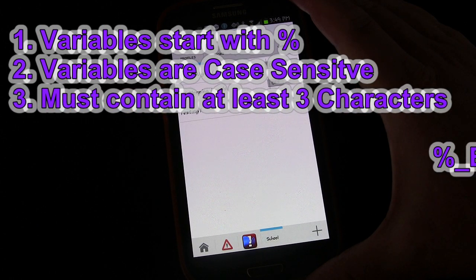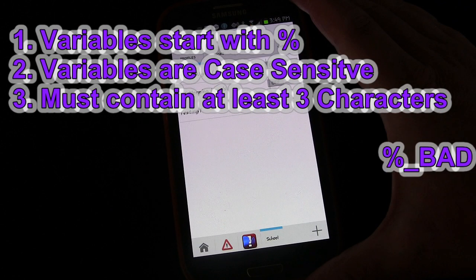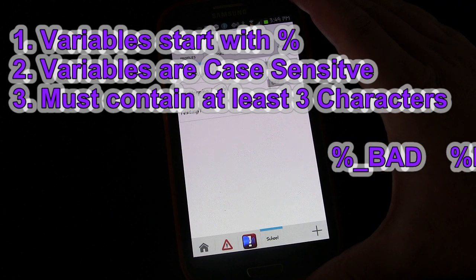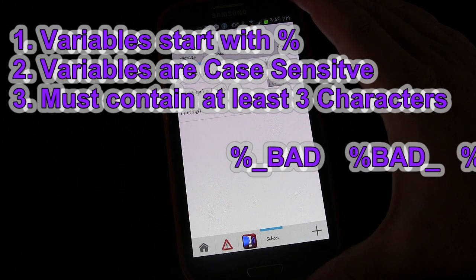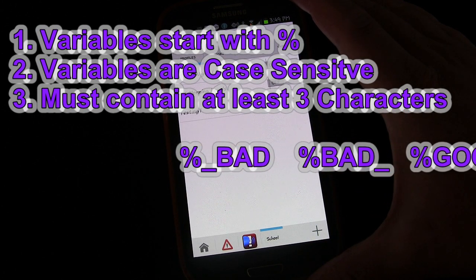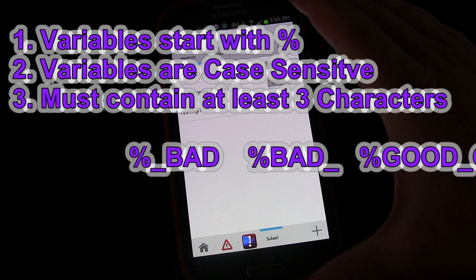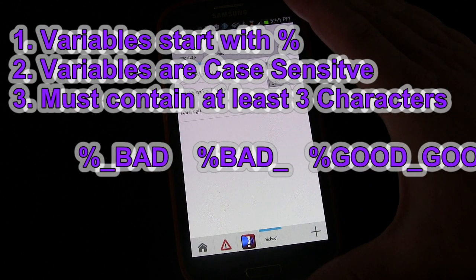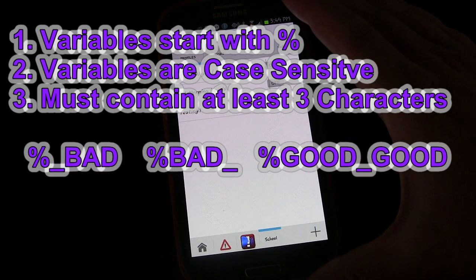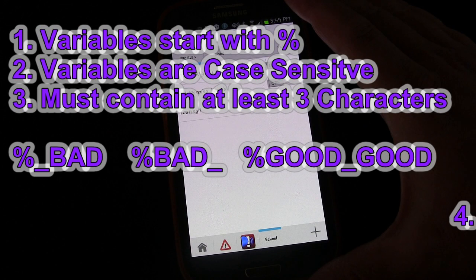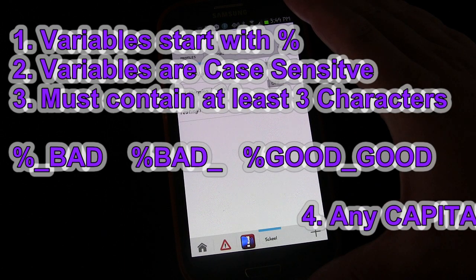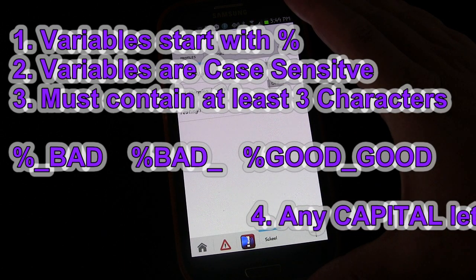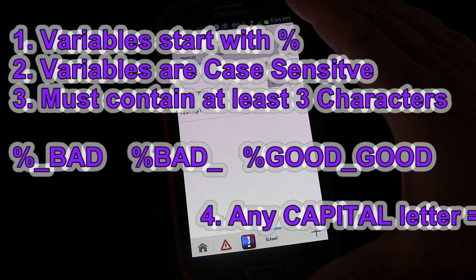A global variable holds permanently and can be accessed by any other task. It will maintain its value until it is changed or Tasker is uninstalled. So if you have a capital letter inside the variable, that makes it permanent and global — meaning other apps could potentially read the variable, and it will stay whatever value it has until Tasker is removed or you change it.